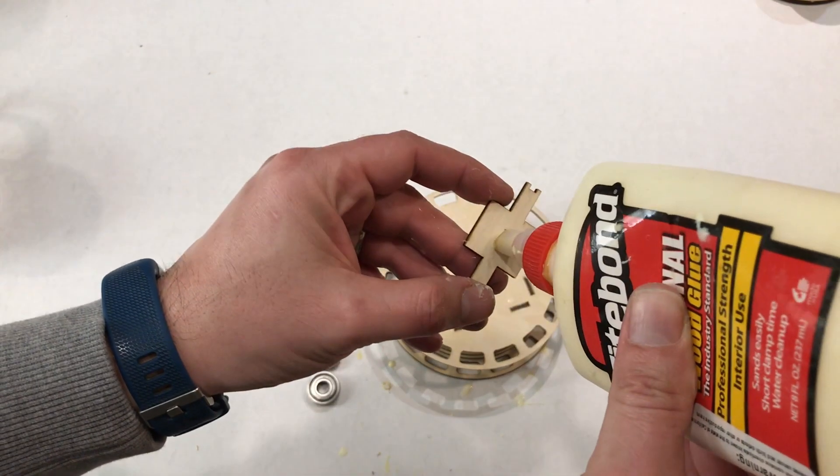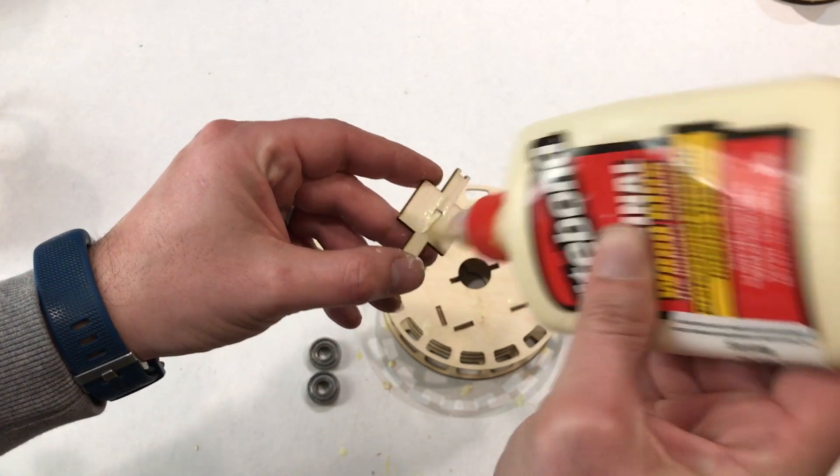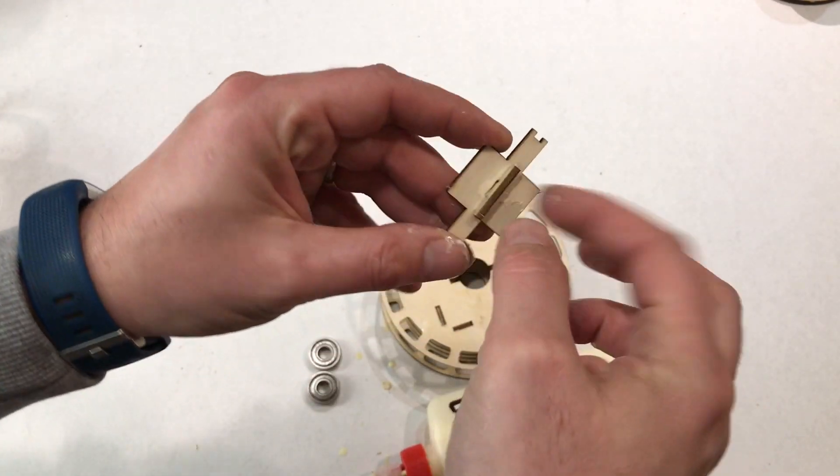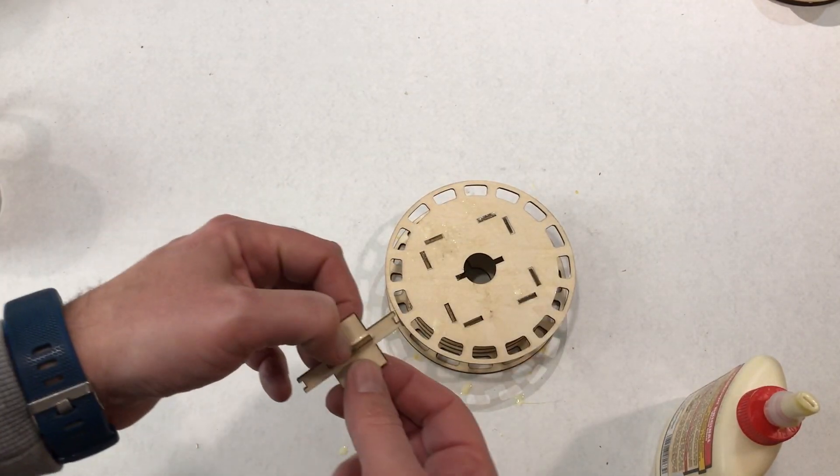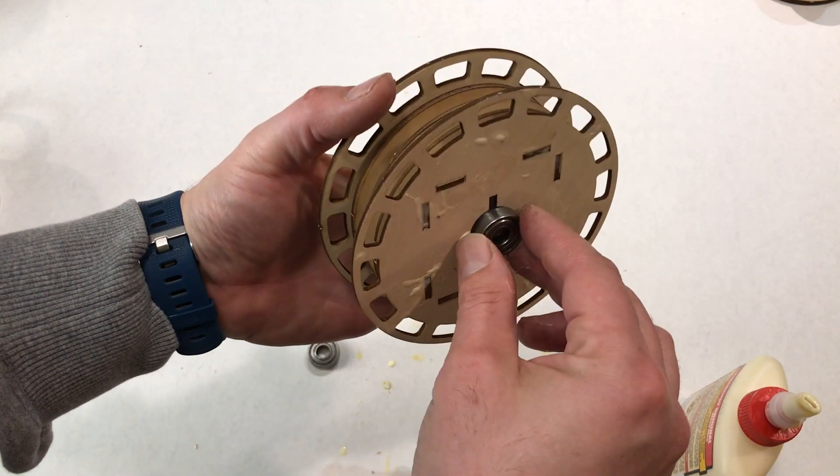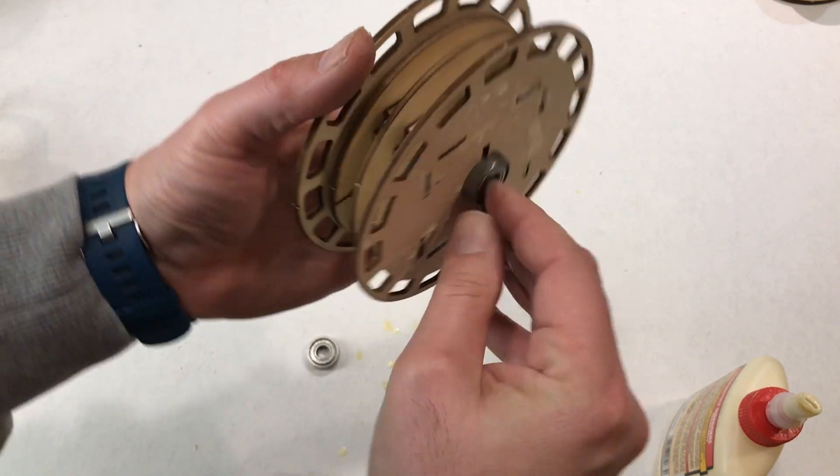Put some glue on here, drop this guy in. Okay, and now I like to put a bearing on one side, just gently get it started.